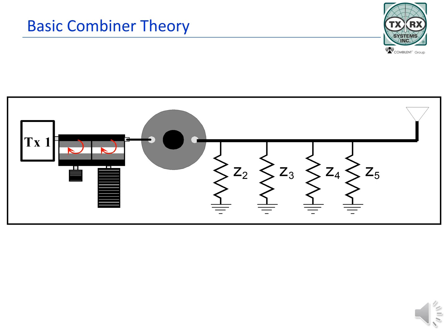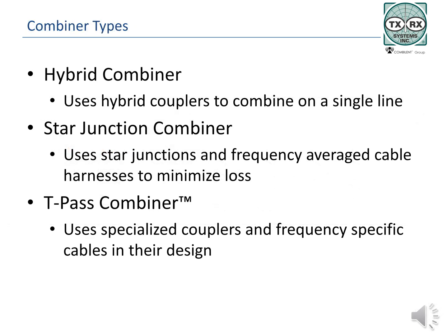Coverage requirements will limit how much insertion loss can be tolerated. Combiner design is a balancing act between tolerable loss, isolation requirements, cost, and size. Many times, cost will limit what can be done, but physics and the frequency plan dictate the outcome. This section will not go into detail on combiner design, but will be an introduction into basic characteristics and terminology.